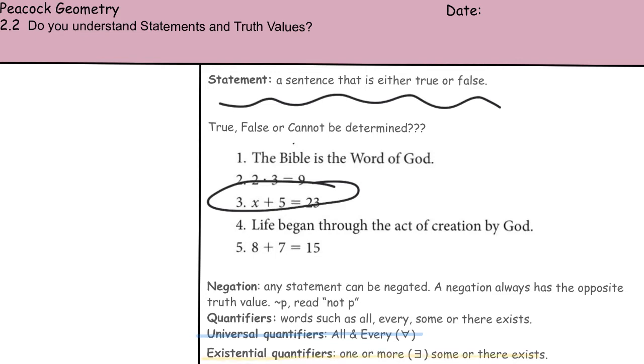An example of a universal quantifier would be all mammals breathe oxygen. That's the definition of a mammal - we breathe oxygen. An existential quantifier, one or more, or there exists. There exists some mammals with four legs. Some mammals have four legs and that's a truth.